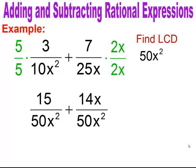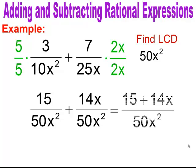Now I have a common denominator, so I add the numerators and get 15 plus 14x all over 50x squared. Nothing simplifies here, so that's my answer.